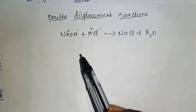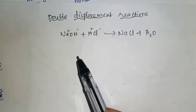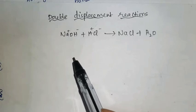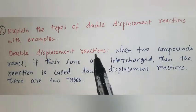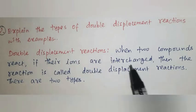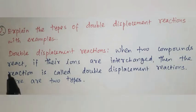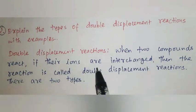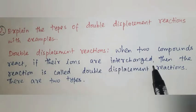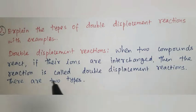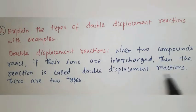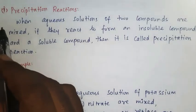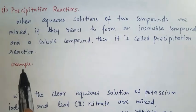There are two types of double displacement reactions. One is the precipitation reaction, and another one is the neutralization reaction. When two compounds react and their ions are interchanged, the reaction is called a double displacement reaction.